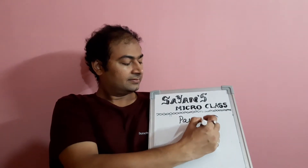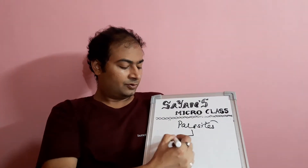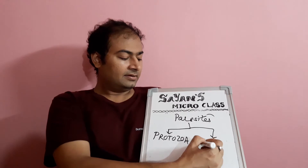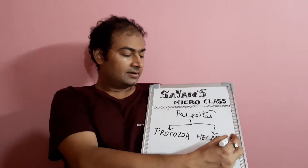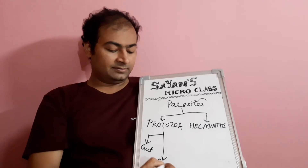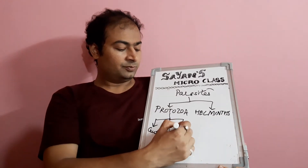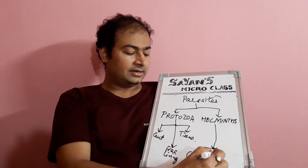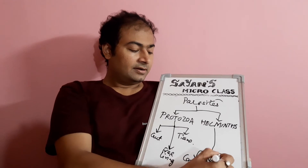Today we will start briefly about parasites — just the introduction. Parasites can be protozoa and they can be helminths. Protozoa are broadly: gut protozoa, free-living protozoa, and tissue protozoa. Helminths can be of three types: cestodes, nematodes, and trematodes.